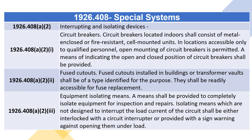Metallic enclosures shall be grounded. 1926.408(A)(2) — Interrupting and Isolating Devices. 1926.408(A)(2)(i) — Circuit Breakers. Circuit breakers located indoors shall consist of metal-enclosed or fire-resistant, cell-mounted units. In locations accessible only to qualified personnel, open mounting of circuit breakers is permitted. A means of indicating the open and closed position of circuit breakers shall be provided.